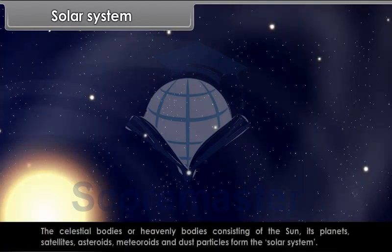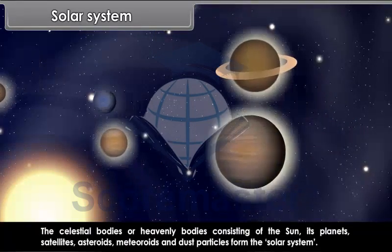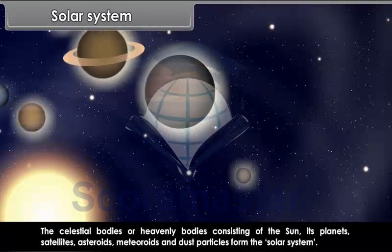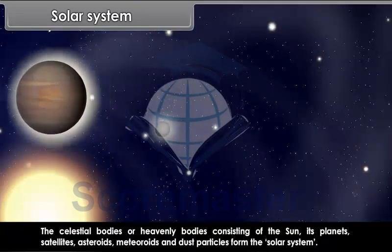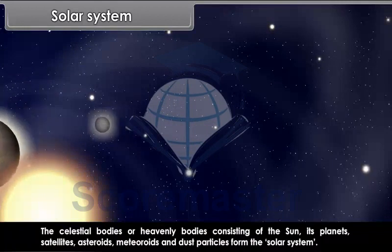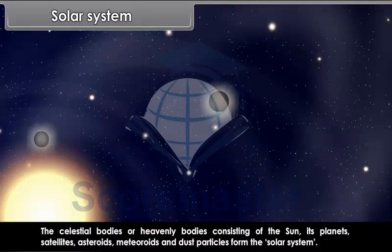The celestial bodies or heavenly bodies consisting of the sun, its planets, satellites, asteroids, meteoroids and dust particles form the solar system.